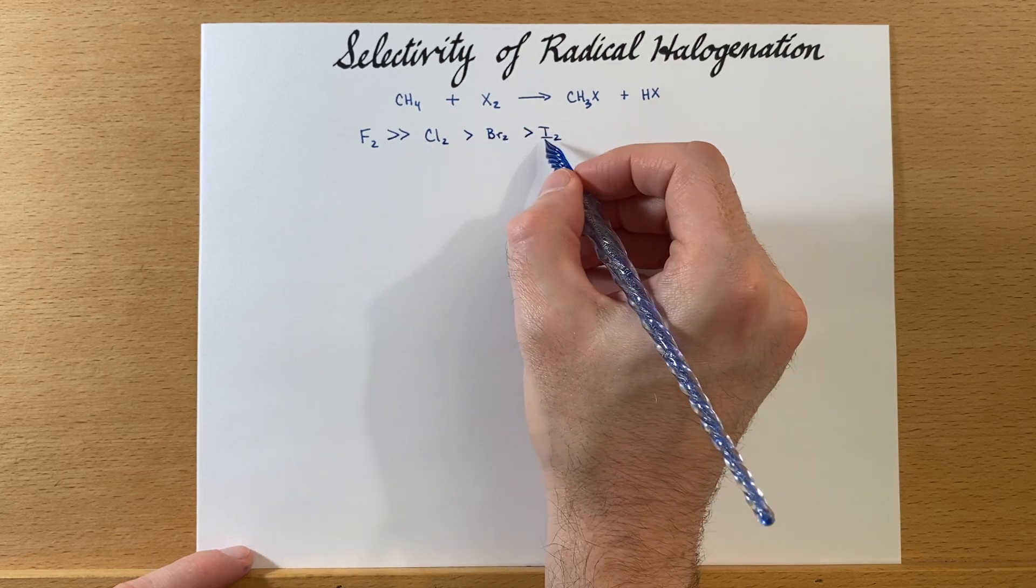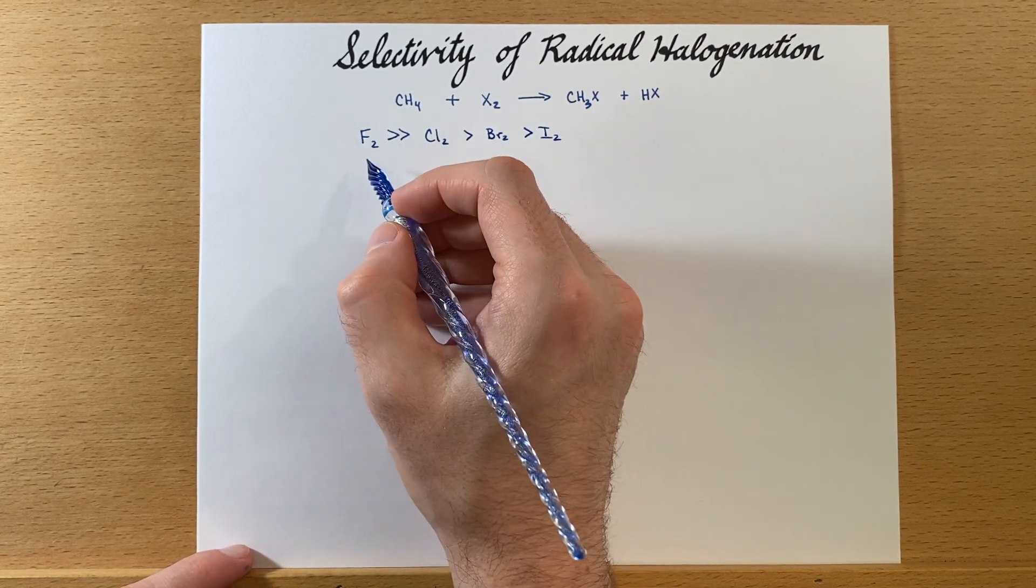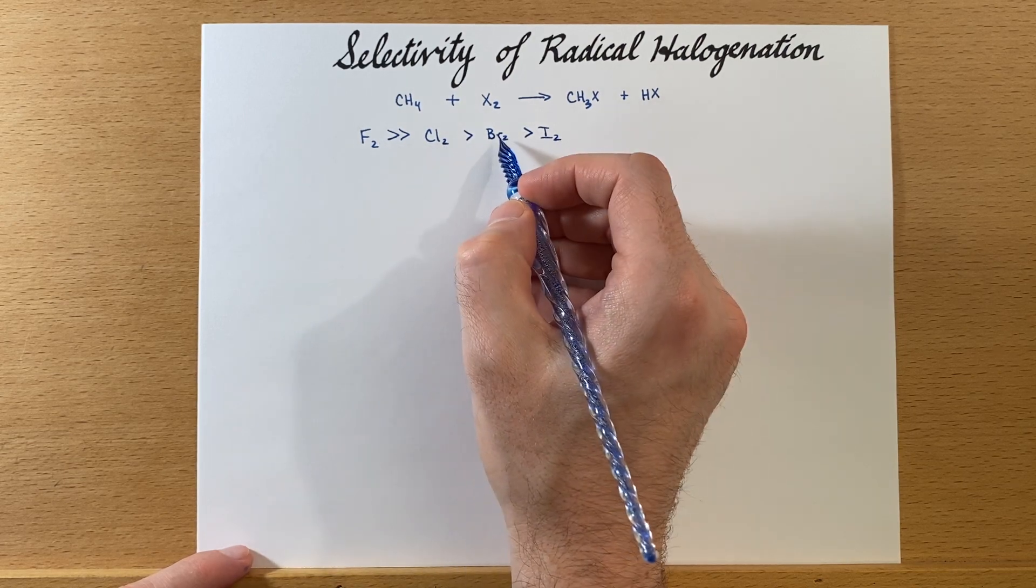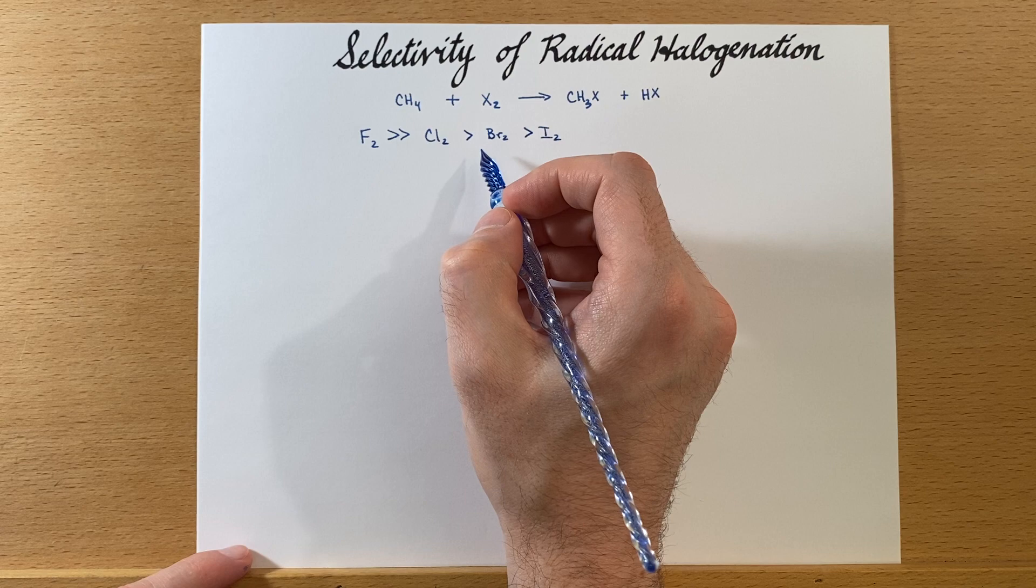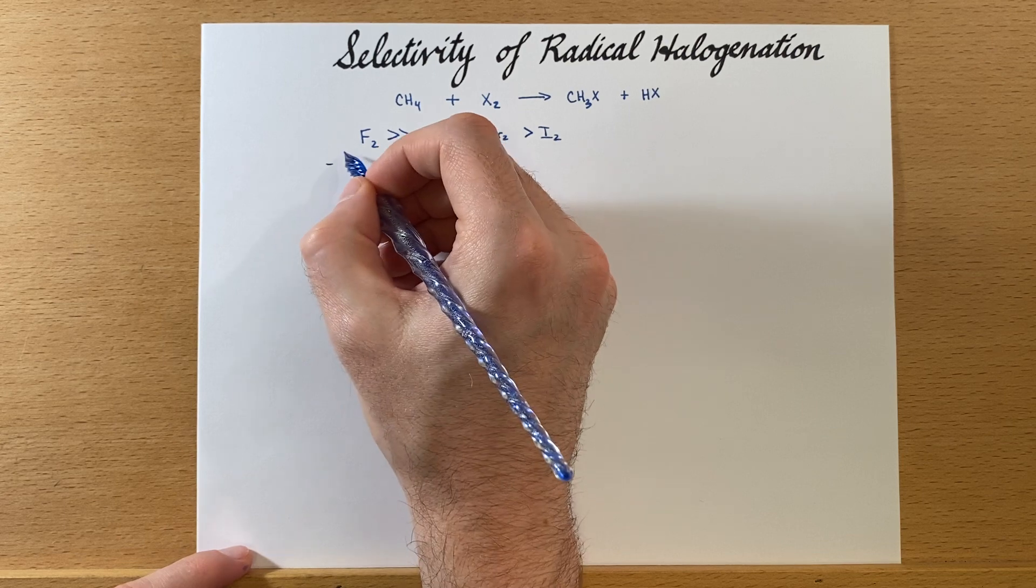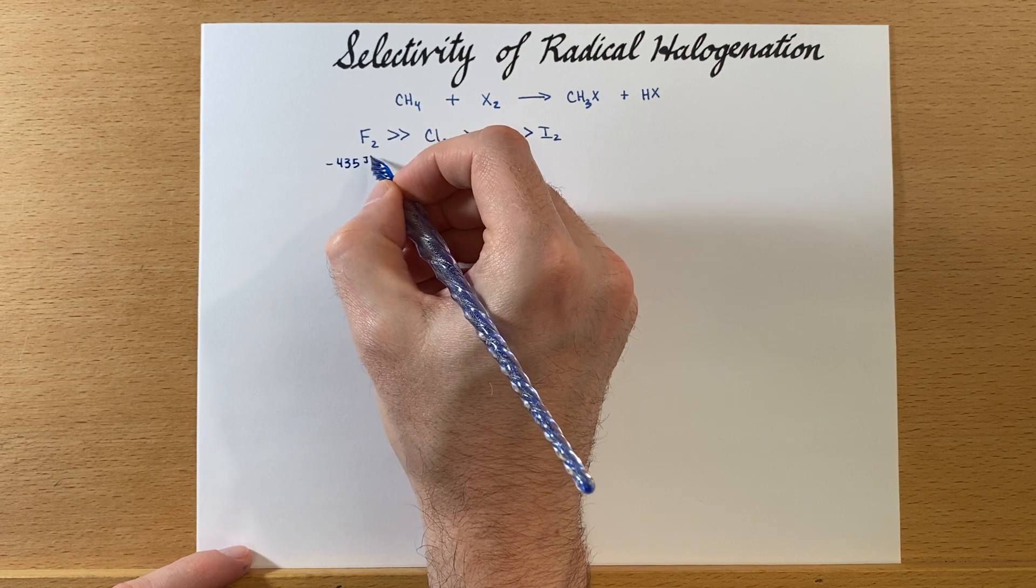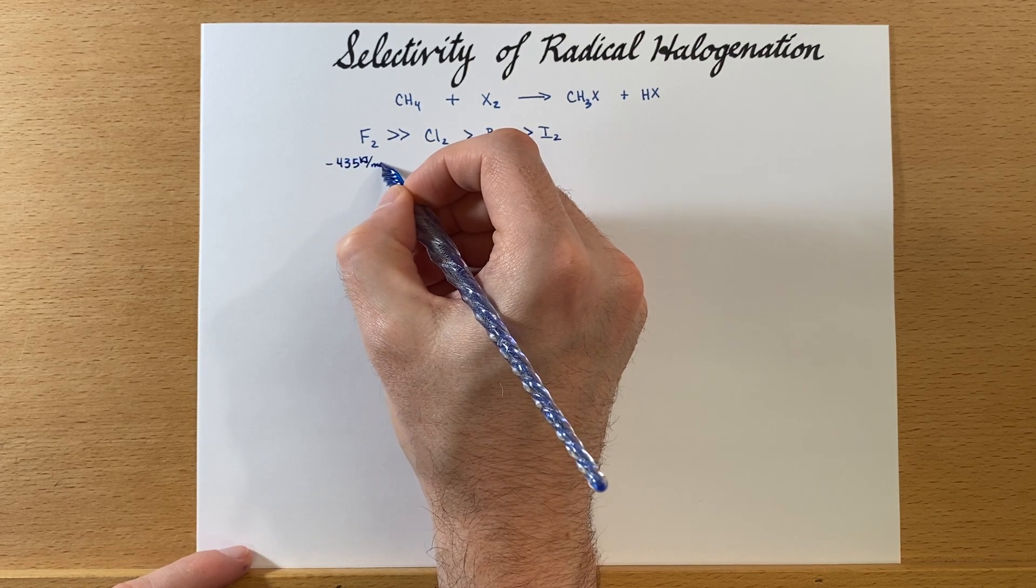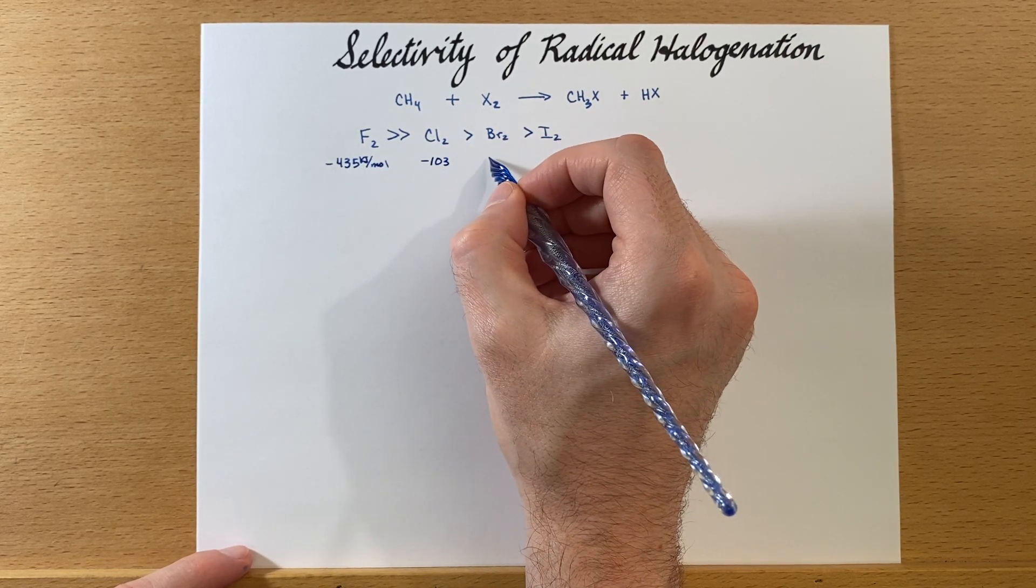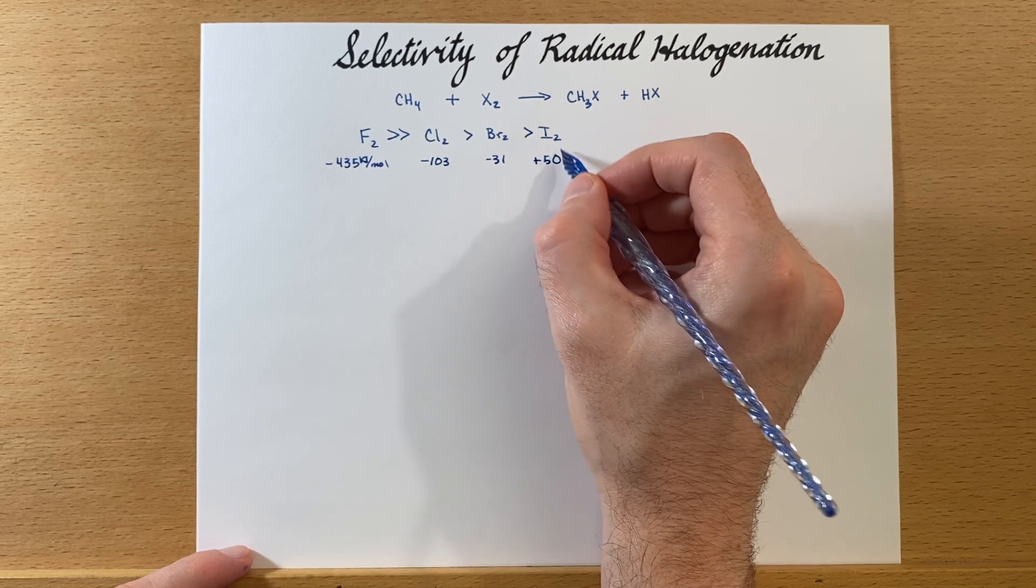What do I mean by fluorine being very reactive? Well, it's quite exothermic. Chlorine and bromine are also exothermic, but not to this level. This reaction has negative 435 kilojoules per mole for fluorine, negative 103 for chlorine, negative 31 for bromine, and plus 50 or endothermic for iodine.